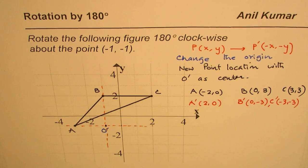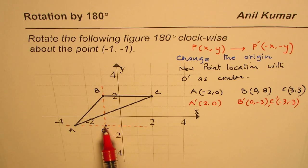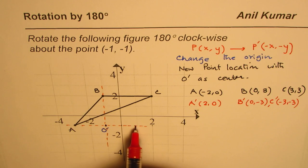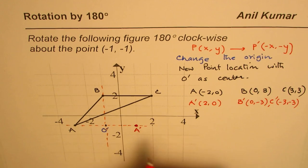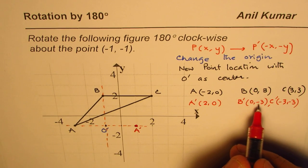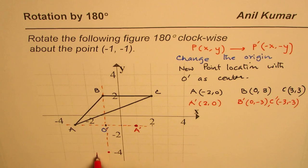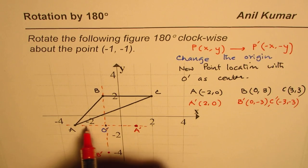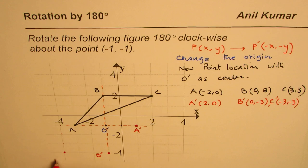how these points are going to change. Let us locate these points with reference to our original origin. A' at (2, 0) from the new origin means going two units to the right. B' is (0, -3), so that is B'. C' is (-3, -3), one-two-three and one-two-three, so that is C'.